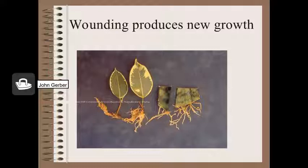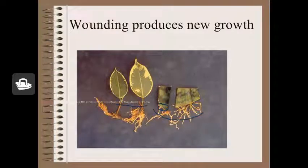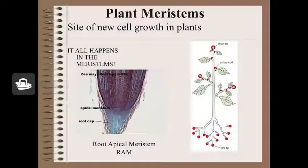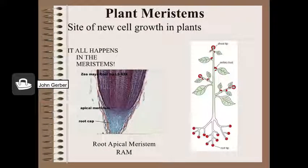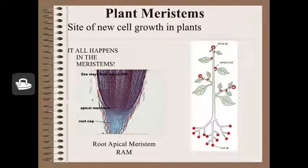Here is a cutting from a fig tree on the left and from a snake plant on the right. Notice the wounded areas right where the plant is cut — they produce callus material and new roots growing out of it. Remember that plant meristems are omnipotent; that is, they have the ability to produce new tissues. Each of the red dots in the diagram on the right show areas where meristems may exist in this plant — generally good locations to take new cuttings.